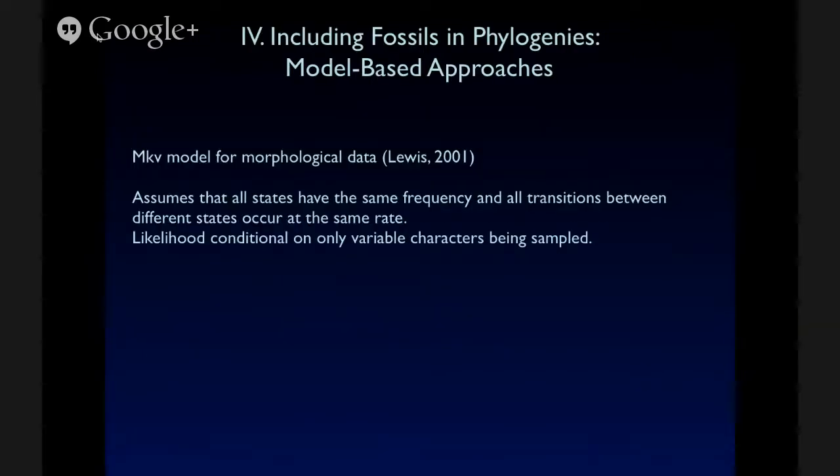What about including fossils in model-based approaches? So Paul Lewis designed the MKV model for morphological data, and this is basically a modified version of the Duke's Cantor model, which assumes that all states have the same frequency, and transitions between different states occur at the same rate. And so this is conditional on only variable characters being sampled, and that's certainly something that's usually true for morphological matrices. Again, we don't include characters that don't change when we're constructing those data matrices. And Nylander and colleagues also noted that likelihood calculation should be conditioned based on parsimony informative ascertainment biases, which can be implemented in programs such as Mr. Bayes. And so it's not only that we're including only variable characters, we're generally also excluding apomorphies that don't inform parsimony analysis when these data are originally being collected.